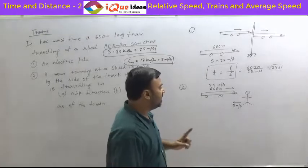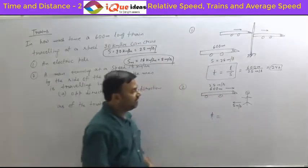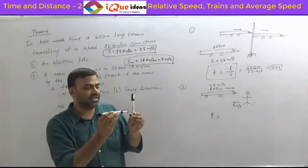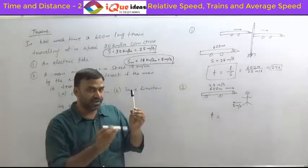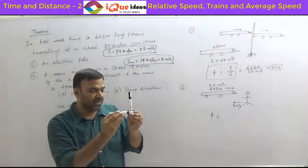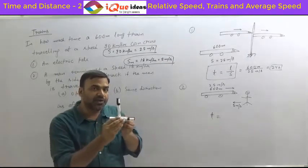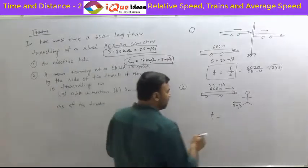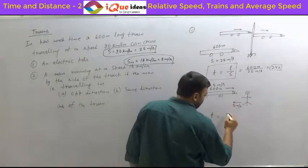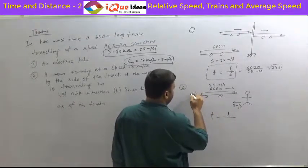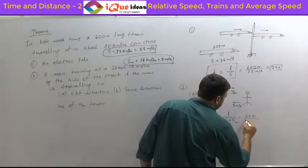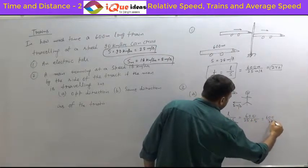We have to consider relative speed. In this case, the distance travelled is still the length of the train, but since they move in opposite directions the speeds get added. So the time taken equals 600 divided by (25 + 5), which is 600 divided by 30, giving 20 seconds.